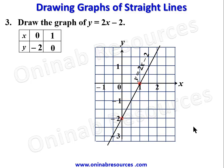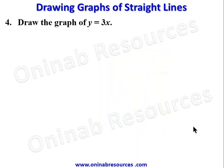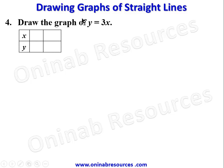For problem 4, we are drawing the graph of y equals 3x. Creating our table of values: when X is 0, Y is also 0, because 3 times 0 is 0. So the straight line passes through the origin. Making Y equal to 0 also gives X equal to 0 — we'd keep repeating the same point. So instead, we take X equal to 1; then Y equals 3. These are the two points we will plot.